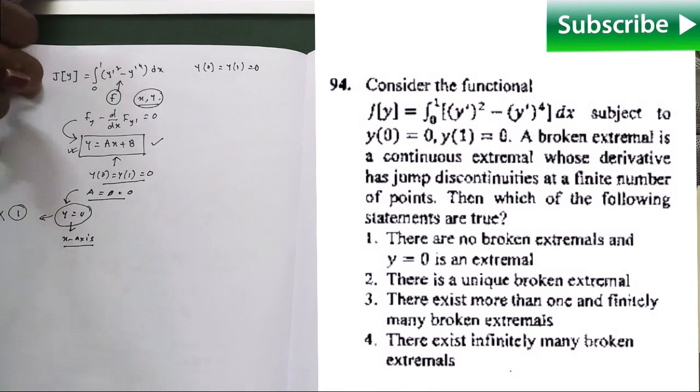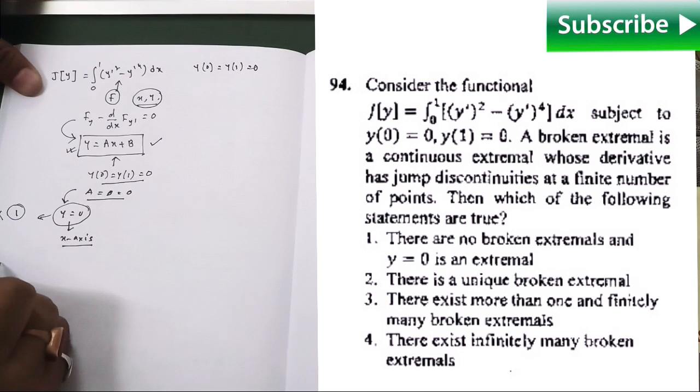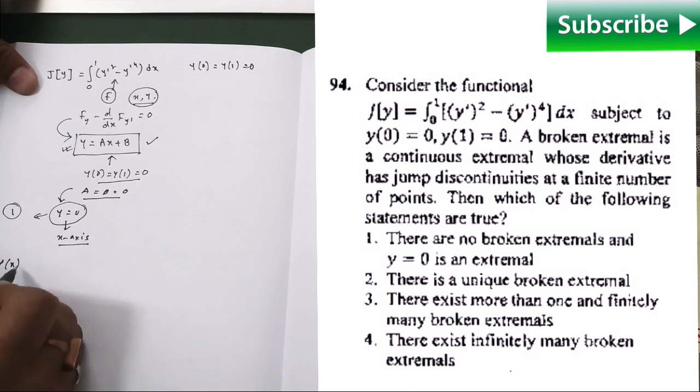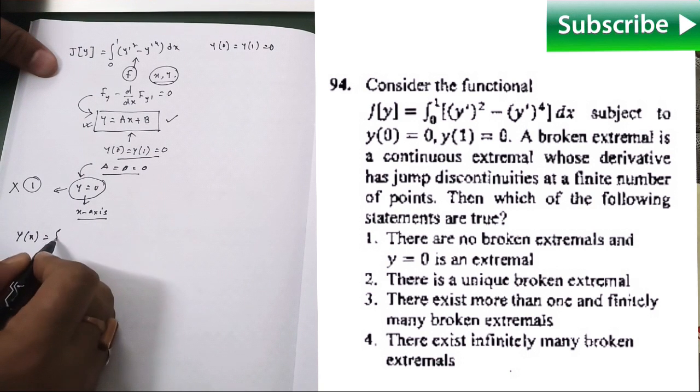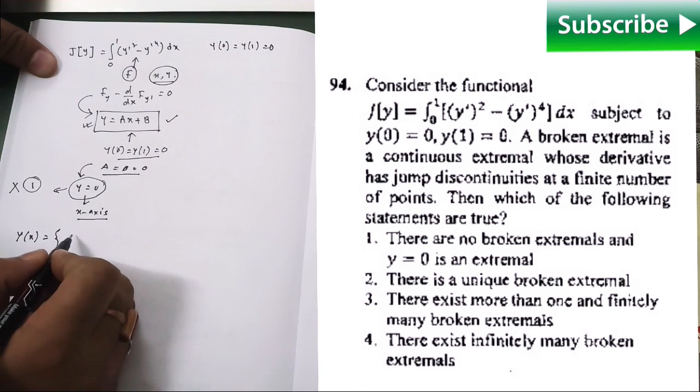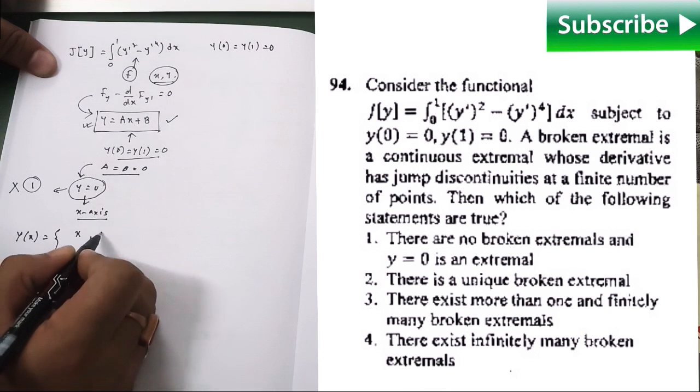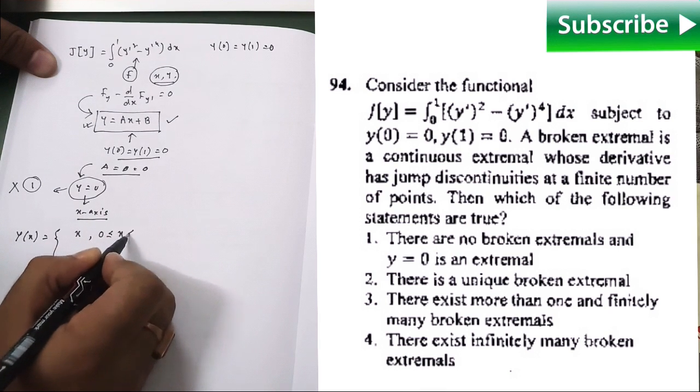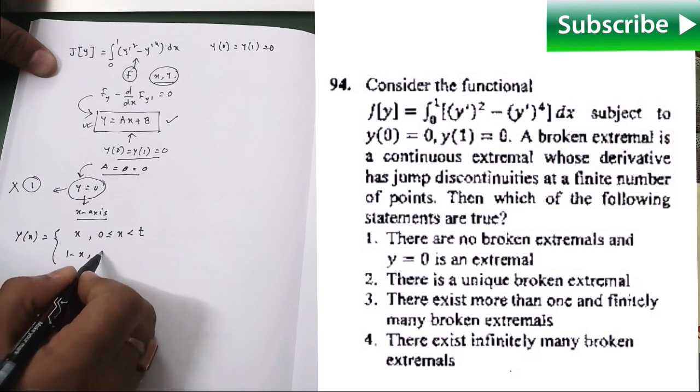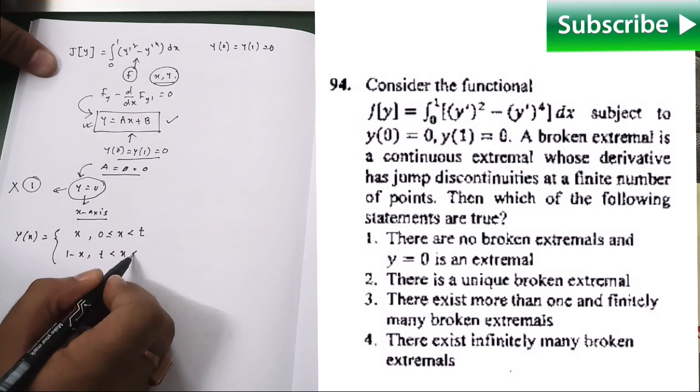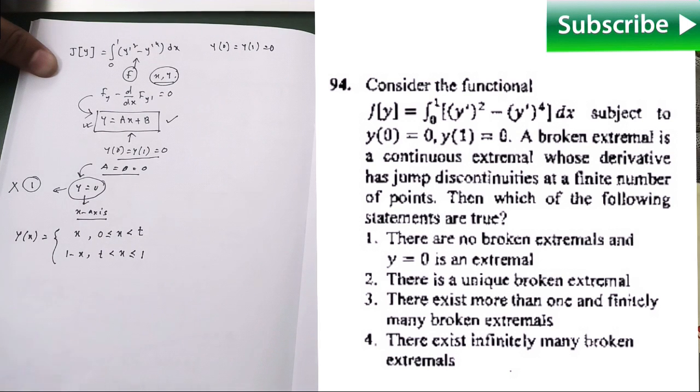Now, to tackle the rest of the three options, you should construct a function y(x) like this way: y(x) equals x when 0 ≤ x < t, and 1 minus x where t < x ≤ 1.